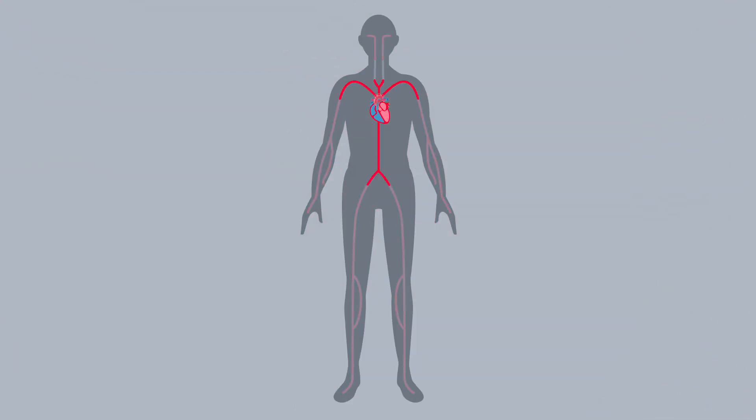Your heart supplies blood to the entire body, including your brain, through a network of blood vessels known as your circulatory system.